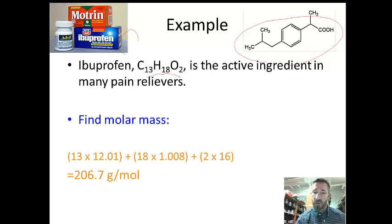You should know how to determine the molar mass of ibuprofen, which includes 13 carbons at 12.01, 18 hydrogens at 1.008, and 2 oxygens at 16. The total molar mass of ibuprofen is 206.7.